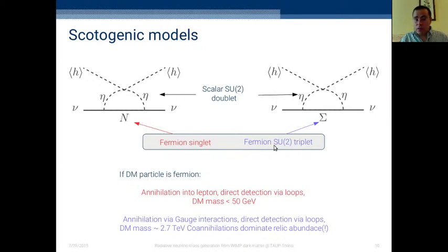In the other model, if the neutral component of this triplet is the dark matter, the lightest particle, then annihilation is mainly to gauge bosons, W bosons. Direct detection is also via loops. But due to the very degenerate case between the charged component and the neutral component, your dark matter mass has to be of the order of 2.7 TeV. The co-annihilation with the charged component of this triplet dominates and controls the relic abundance in the early universe.